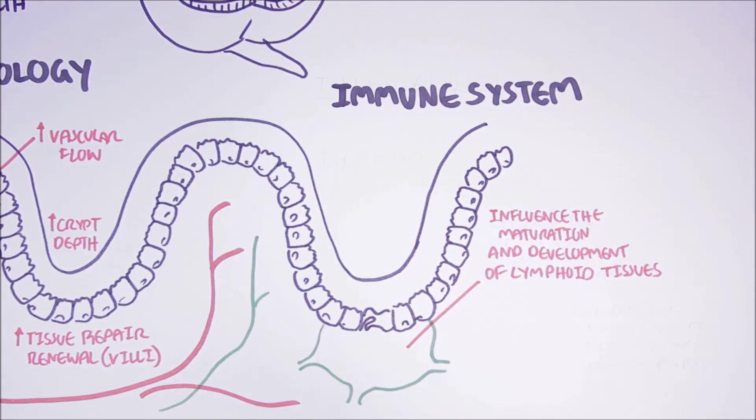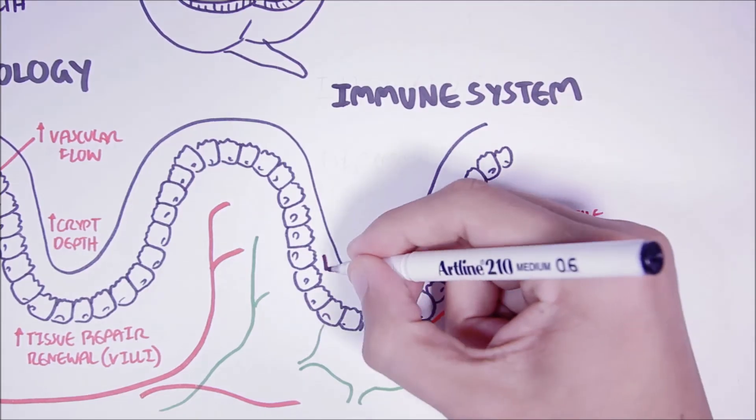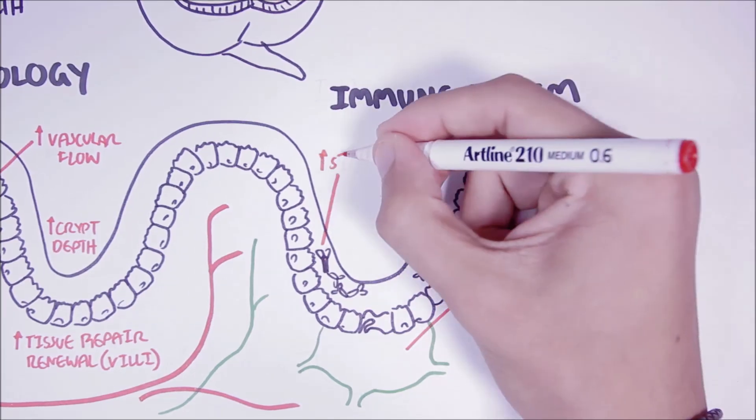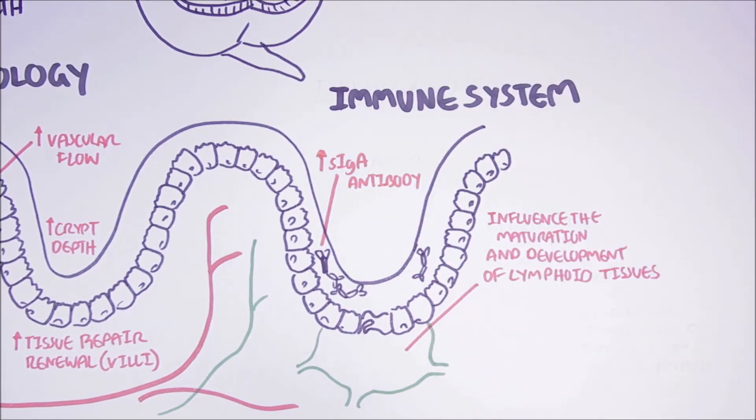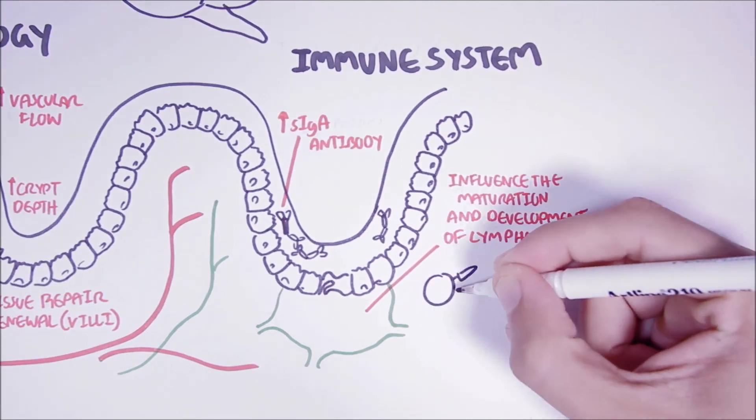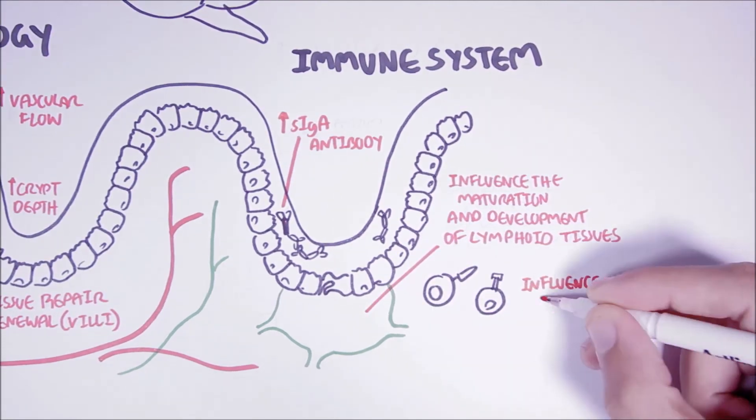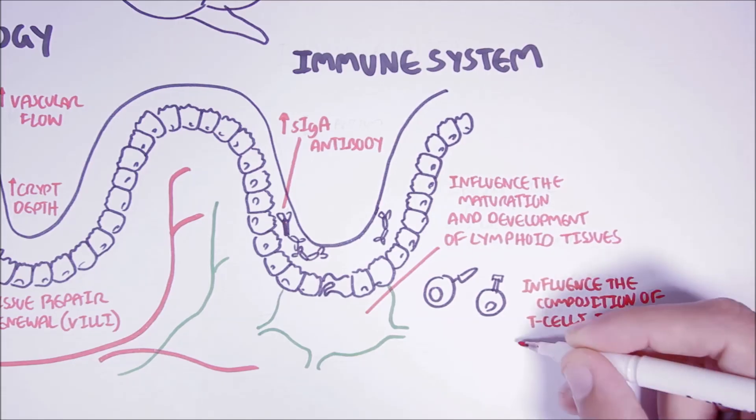The gut microbes are also able to regulate production of some immune mediators, including increasing concentration of secretory IgA antibodies. Recently, it has been found that the bacteria are able to influence the composition of T cells in the lamina propria.